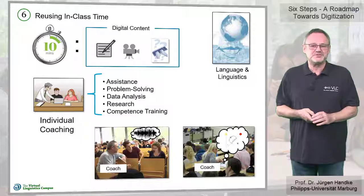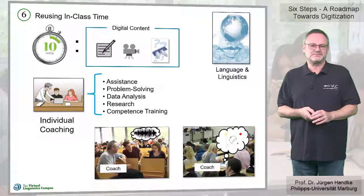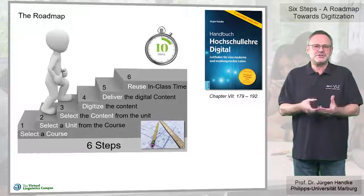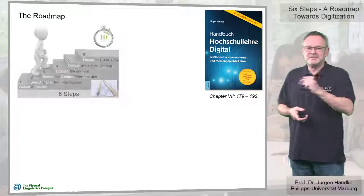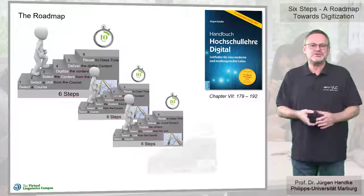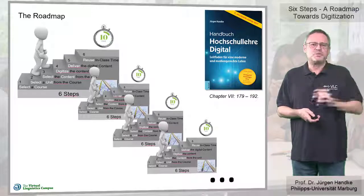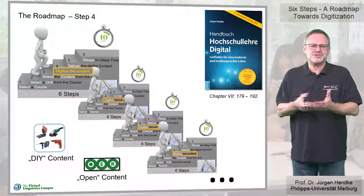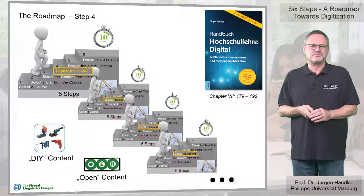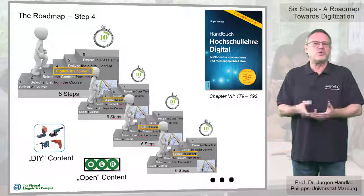And now the game becomes obvious: more time for our students, more chances for individualization. In summary, our six steps constitute the starting point for the digitization of teaching and learning, and they can now be applied repetitively, thus freeing increasingly longer periods of in-class time. However, I am aware of the fact that step 4 — the digitization of the selected content — is the central and most complex task of this program. For this reason, I will focus on this step in a separate video and discuss all relevant details there.